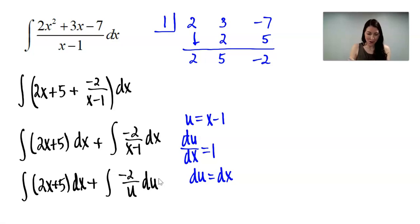Let's come over here to the right side of the screen, and when I integrate, the 2x - I would add 1 to the exponent and divide, so the antiderivative would be x squared. The antiderivative of 5 is going to be 5x, and then for my second integral, 1 over u, the antiderivative is natural log of the absolute value of u. So I would have negative 2 times the natural log of the absolute value of u, and then of course don't forget your plus c.